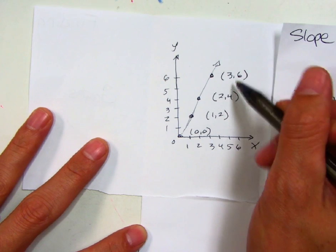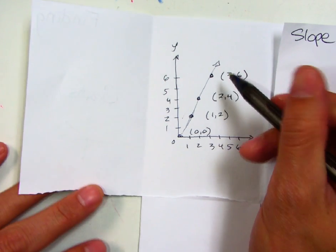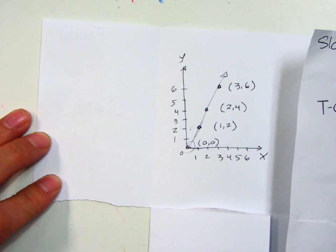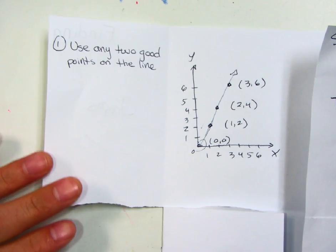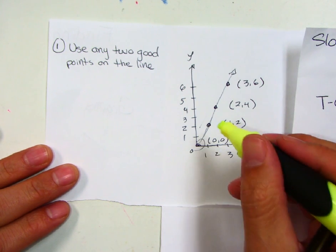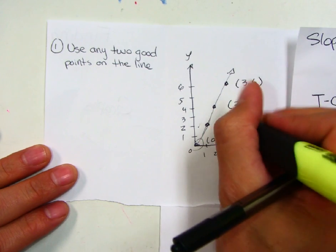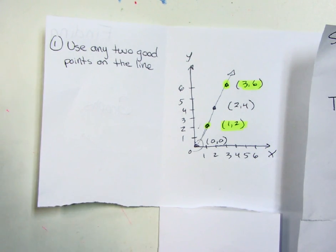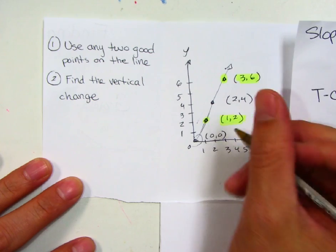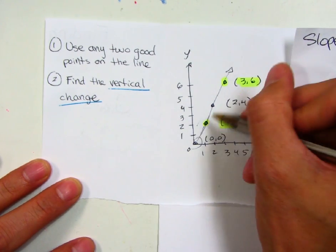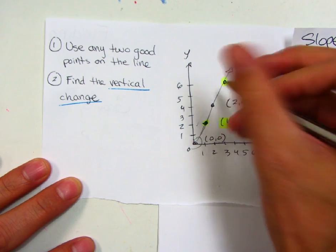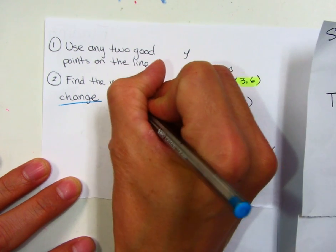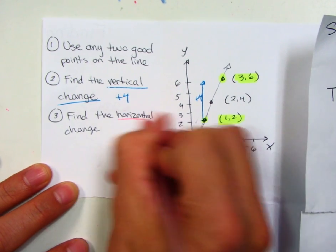The origin, one, two, two, four, and three, six, and I drew a line through it. We consider this to be a proportional relationship because it's straight and it goes through the origin. So here are the steps you're going to need to follow to find a slope when given a graph. First, we need to use any two good points on the line. I'm just going to happen to use one, two, and three, six. The next step is to find the vertical change. If I started here at two and I'm going up to six, how much did it change from two to six is the question. And so here I know that that went up by four.